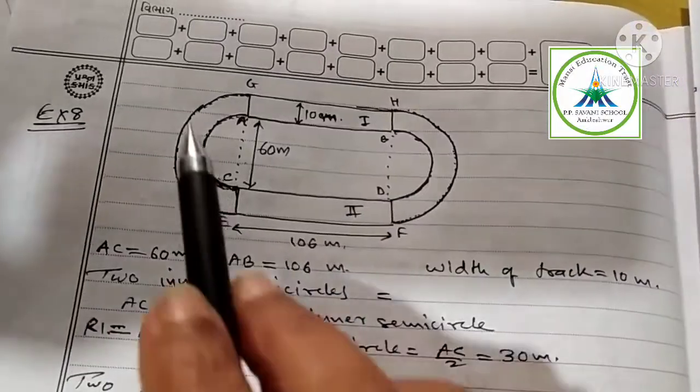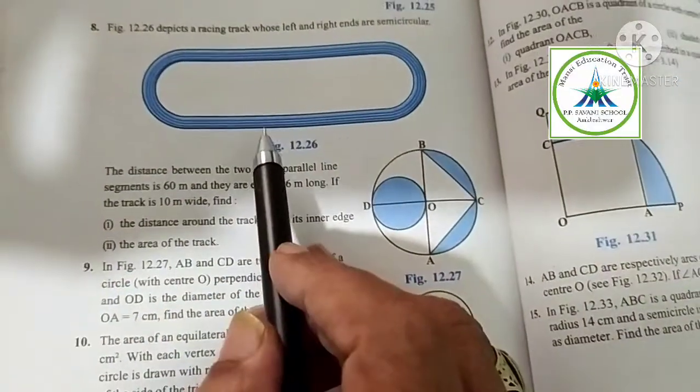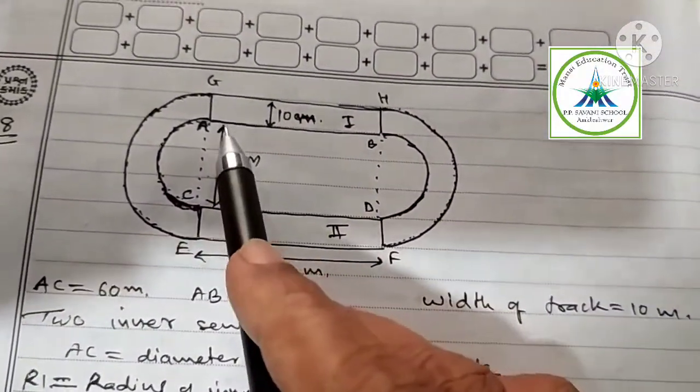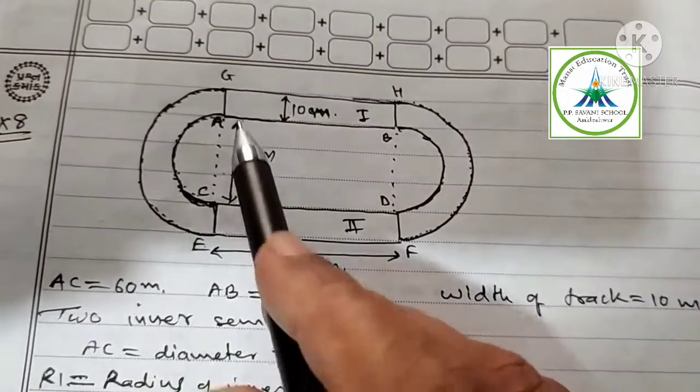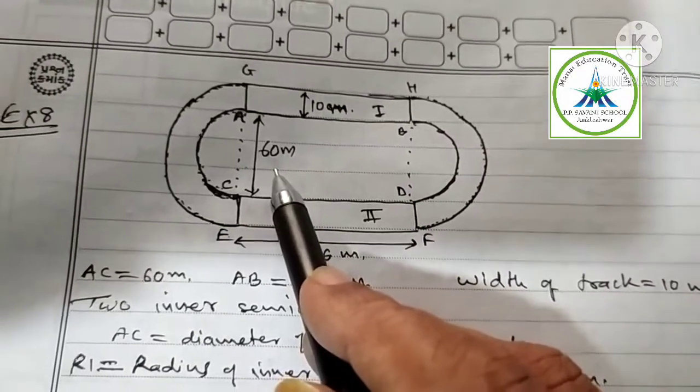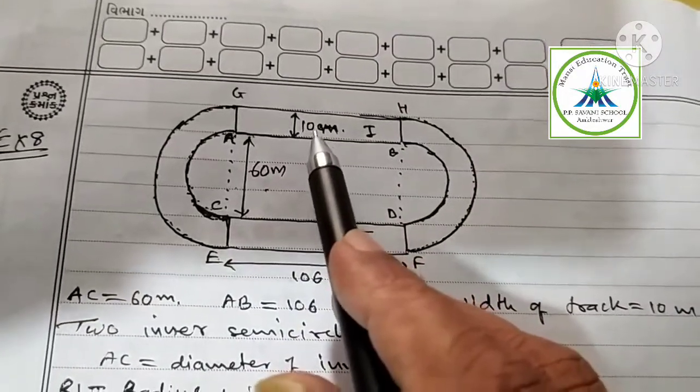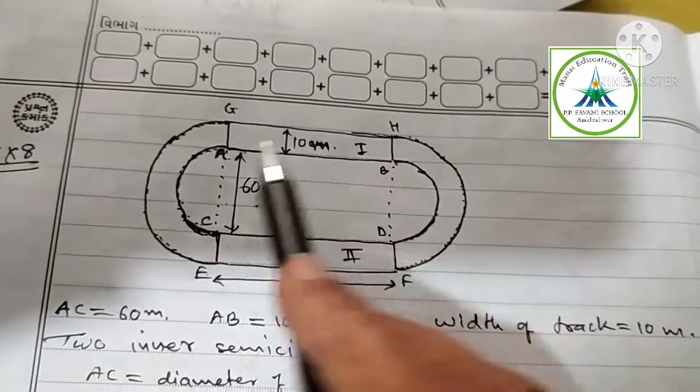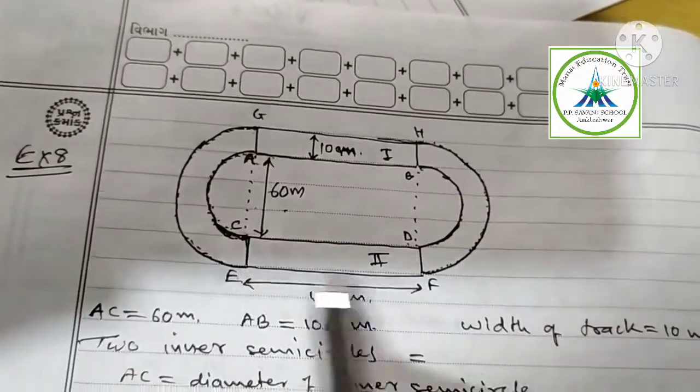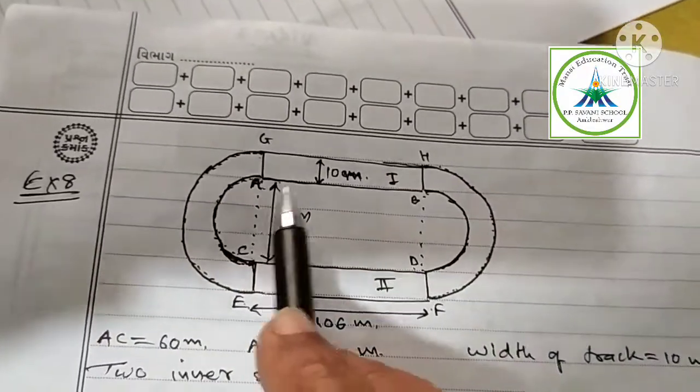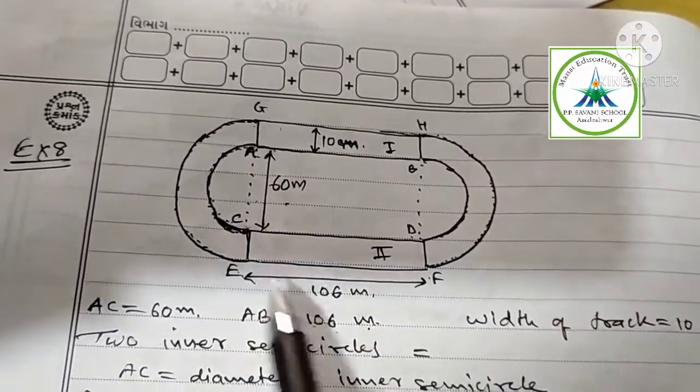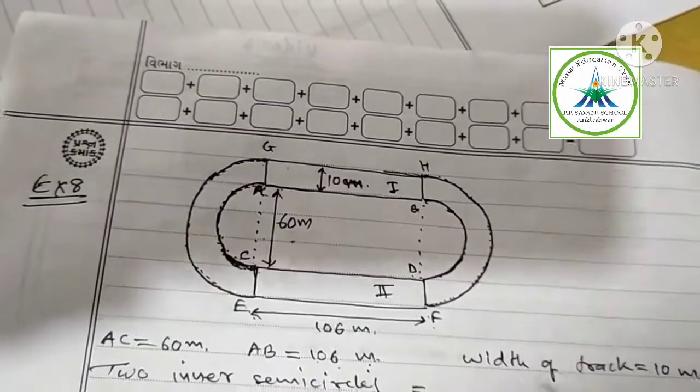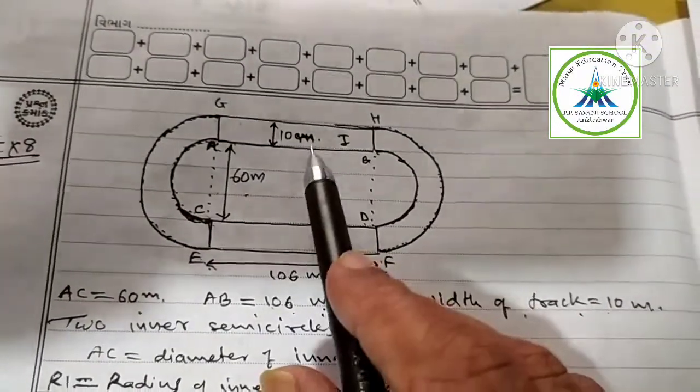Now, let us take example 8. Figure is like this, same figure I have drawn here. They are giving distance between the inner line segments is 60 meter, and width of the track is 10 meter. AC, AB, CD, GH, EF are line segments. Length of these line segments is 106 meter. So from E to F, C to D, A to B, G to H is 106 meter. And width of the track is 10 meter.